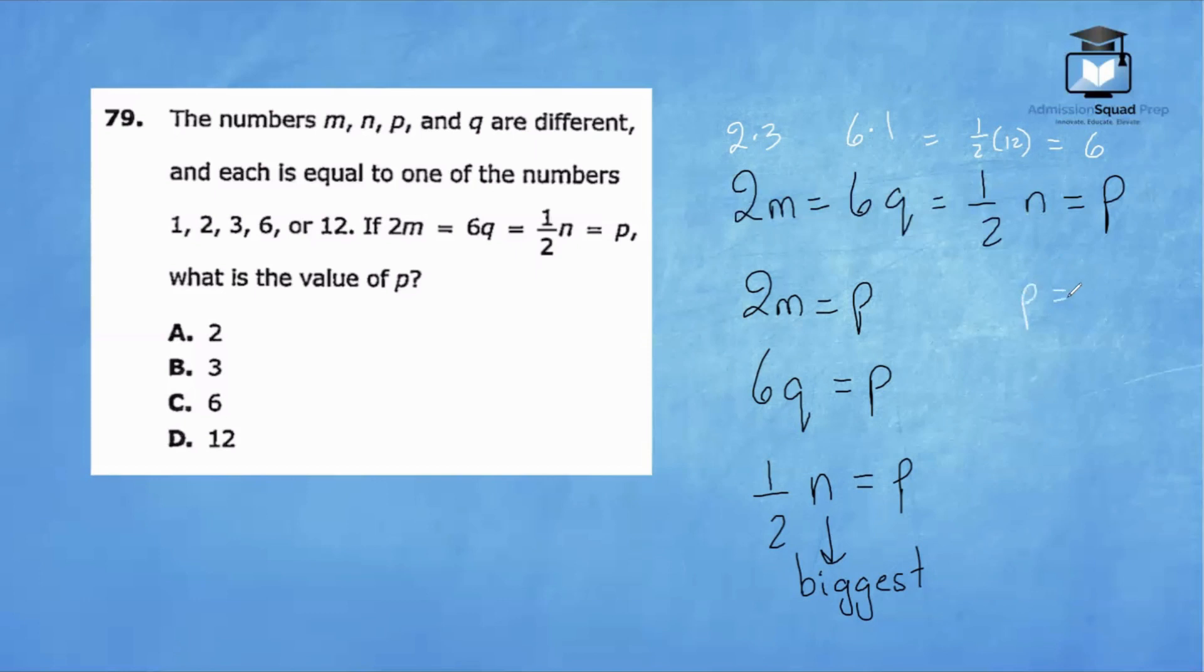We have P equals 6, N equals 12, Q equals 1, and M equals 3. So the correct answer choice is C.